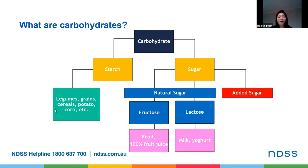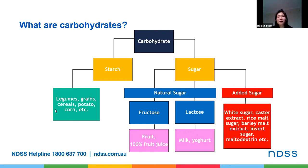Added sugar can come in different forms such as white sugar, castor sugar, barley malt extract, rice malt syrup, inverted sugar, and maltodextrin, just to name a few. These are rarely associated with nutrients and are found in processed foods such as cakes, biscuits, ice cream, soft drink, and pastries. Generally, small amounts are acceptable, but because these foods are also high in fat and salt, if eaten in large quantities they can affect your weight. Like starch and natural sugar, added sugars will also increase your blood glucose levels, but at a faster rate.